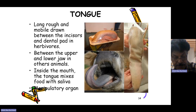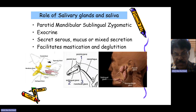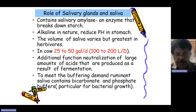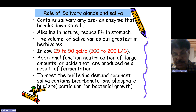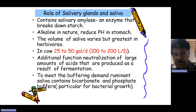Inside the mouth, the tongue mixes food with saliva. The salivary glands — parotid, sublingual, zygomatic, and mandibular — secrete serous, mucous, and mixed secretions that facilitate mastication and degradation. Saliva contains salivary amylase, an enzyme that breaks down starch, and is alkaline in nature. The volume of saliva is greatest in herbivores — a cow produces 25 to 50 gallons, or 100 to 200 liters per day. Ruminant saliva contains bicarbonate and phosphate buffers that neutralize acids produced by fermentation.